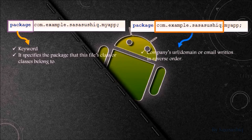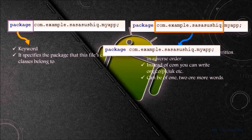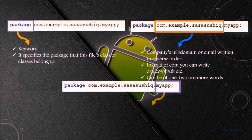It is the company's URL, domain, or email written in reverse order. Instead of com, you can write org, uk, etc. It can be of one, two, or more words. That's the name of the app that you are creating.